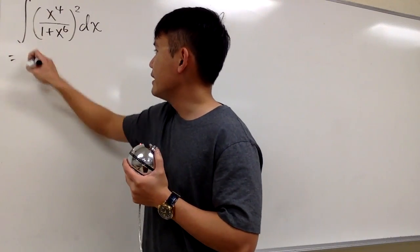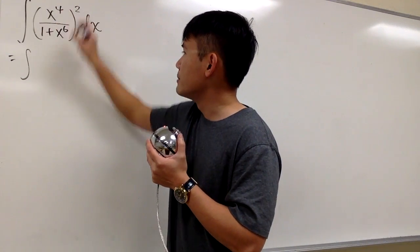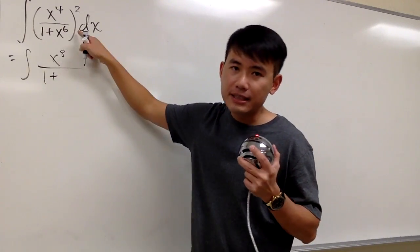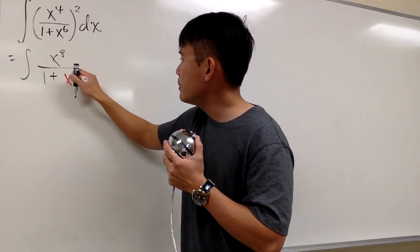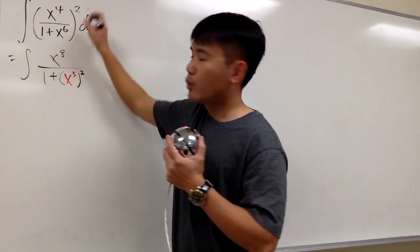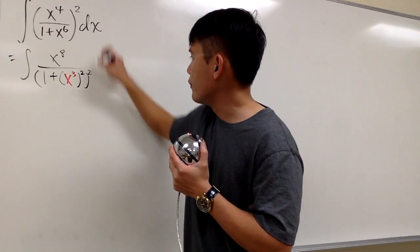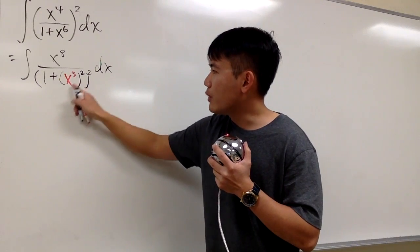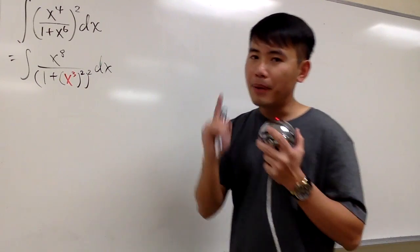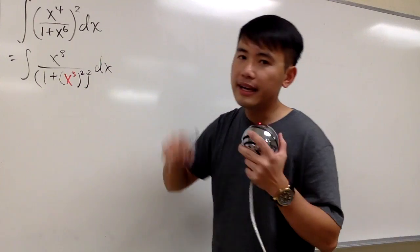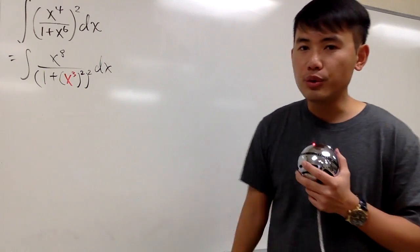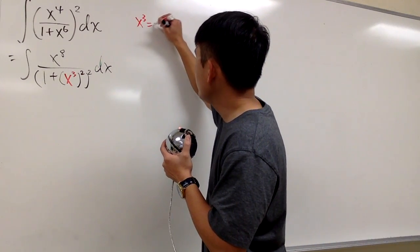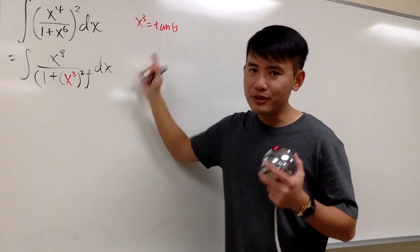To do so, we'll look at this integral as the integral on the top squared. So we'll have x to the 4th times 2, which is x to the 8th power. On the bottom, we'll have 1 plus — instead of x to the 6th power, let's look at this as x to the 3rd power and then squared. Don't forget, we still have to square the denominator, so let's put parentheses and square, and of course write down the dx. The punchline is we'll let x to the 3rd power equal a trig function — tangent theta.